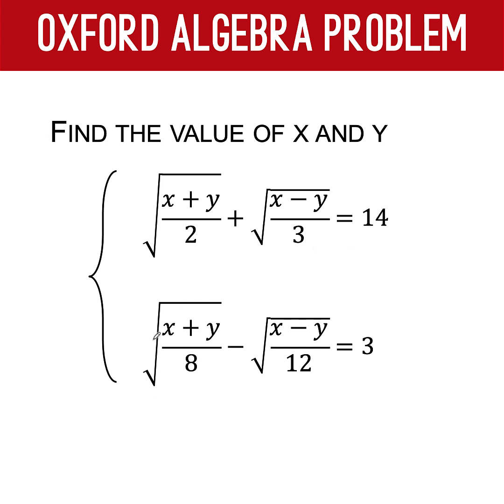And our second equation is the square root of x plus y all over 8 minus the square root of x minus y over 12 equals 3. By just looking at the problem, we know this is a complicated radical equation. But later on, you will realize that this equation is really a beautiful system of radical equations.